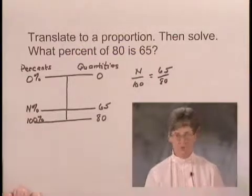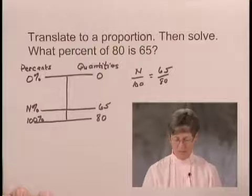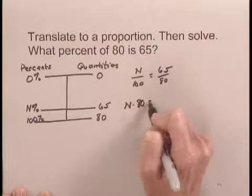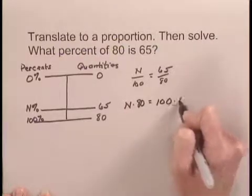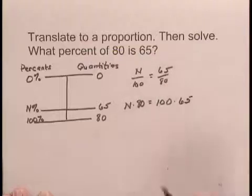So this is the proportion that we wanted to translate to, and now we'll solve it. We'll begin by equating cross products. We would say that N times 80 is equal to 100 times 65. This cross product equals this cross product.